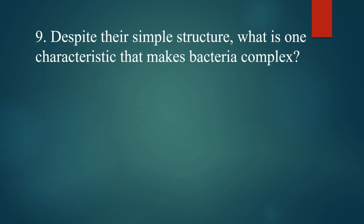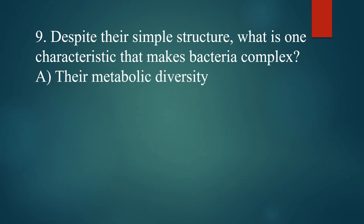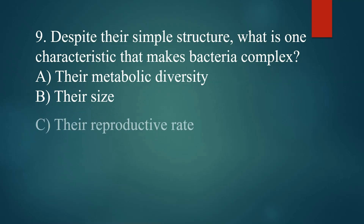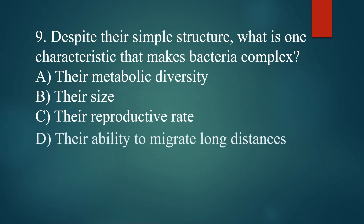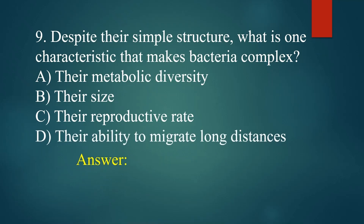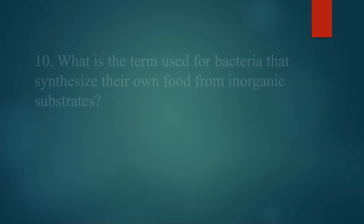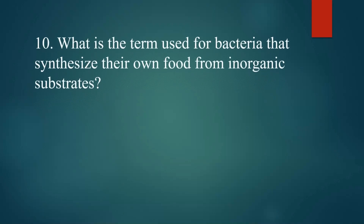Despite their simple structure, what is one characteristic that makes bacteria complex? A. Their metabolic diversity. B. Their size. C. Their reproductive rate. D. Their ability to migrate long distances. Answer: A. Their metabolic diversity.